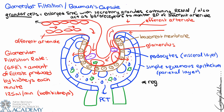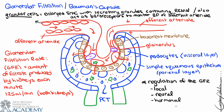The granular cells also act as baroreceptors to monitor blood pressure of the afferent arteriole. They can recognize adequate or inadequate stretch as blood flows in and contract or relax accordingly. In terms of regulation of GFR, we can describe three types: local regulation (also called auto-regulation), neural regulation, and hormonal regulation.